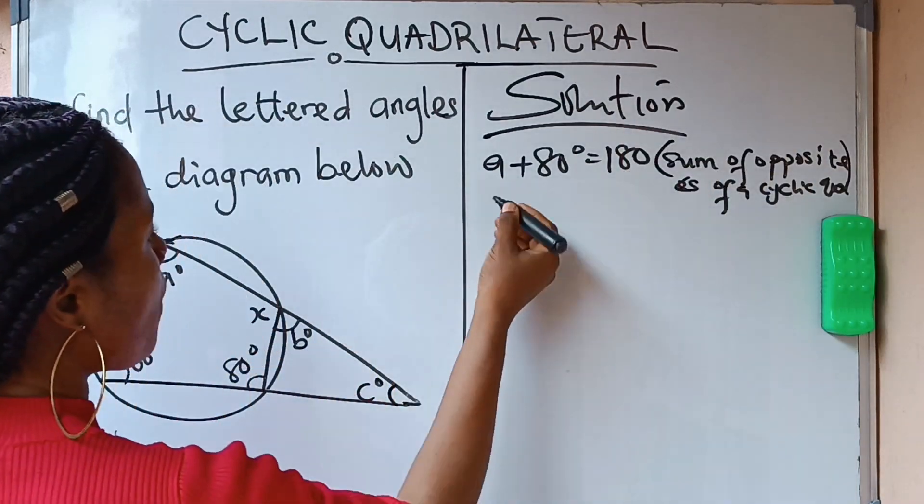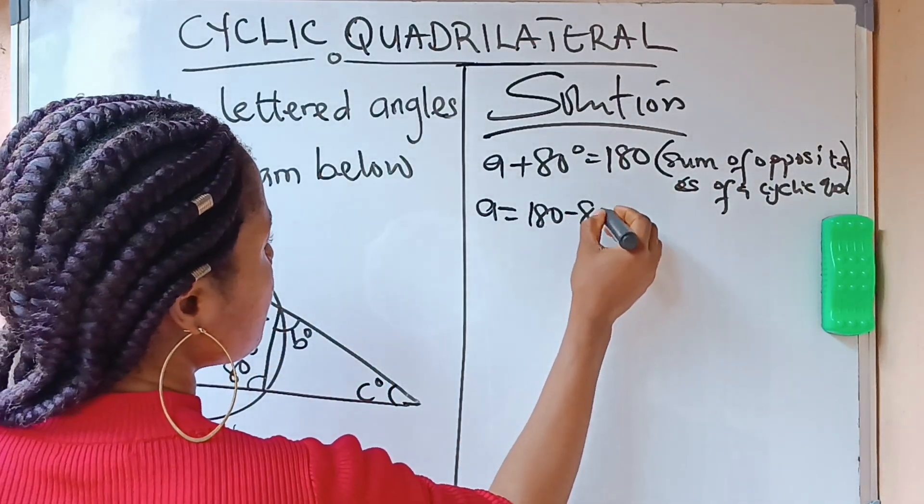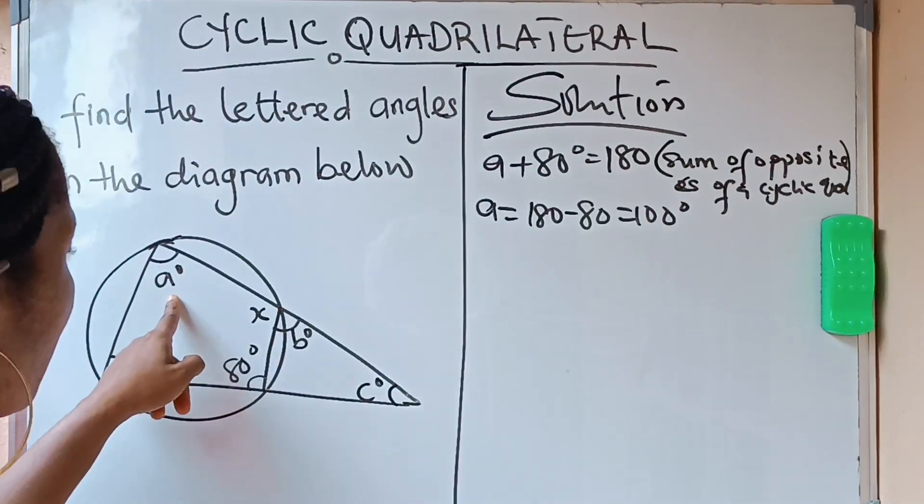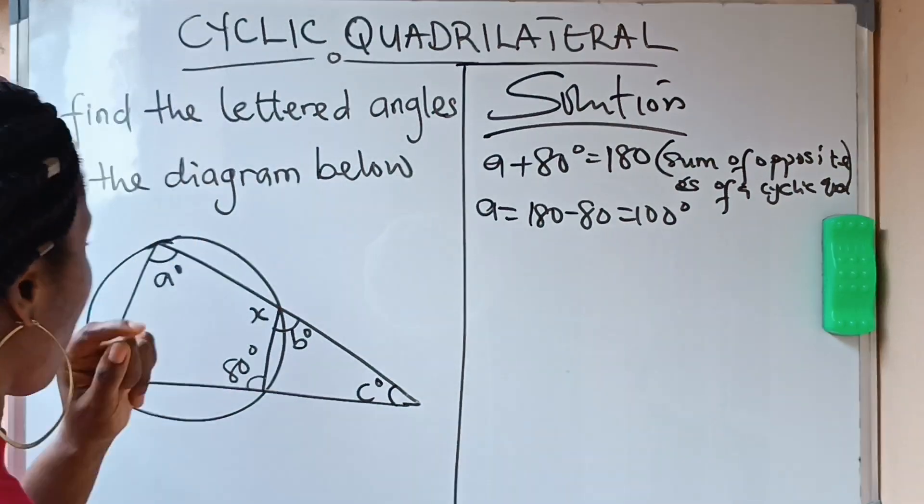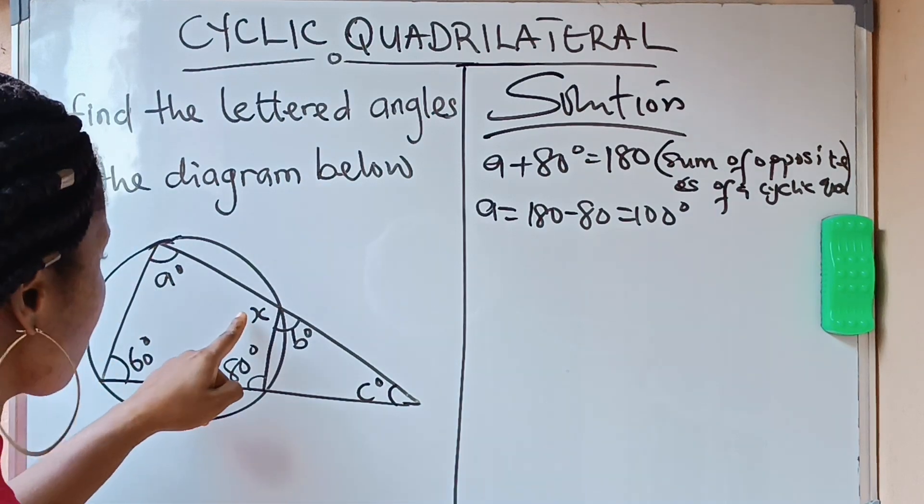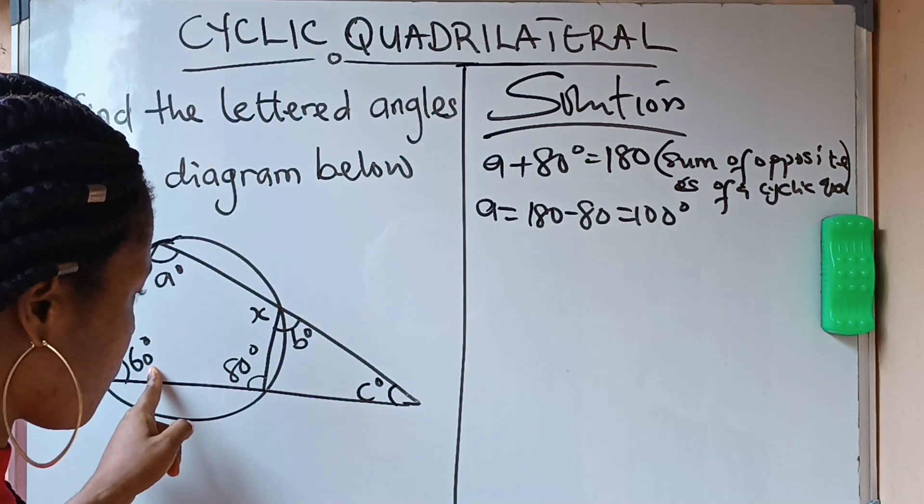Alright, that means our A is equal to 180 minus 80, which is 100 degrees. We have been able to find our A, to get the value for our A. Now, if we use the same theorem, we'll be able to get X because X is opposite what? It is opposite this 60.